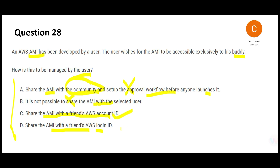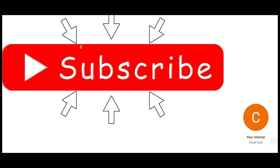Option D says share the AMI with a friend's AWS login ID. No — you don't share with the login ID. The login ID is what someone uses to log into AWS to do work; some people even use the root user login. You share at the account ID level, not the login ID level. The final answer is C: share directly with the friend's AWS account ID. It's like sending money — you send it directly to your friend's account number, not to their internet username.